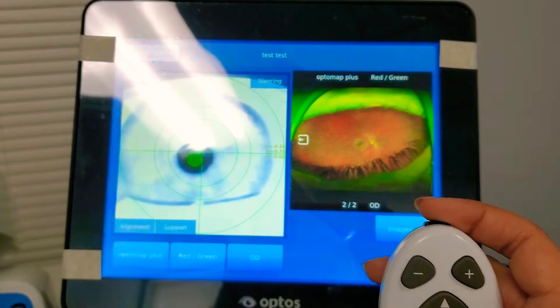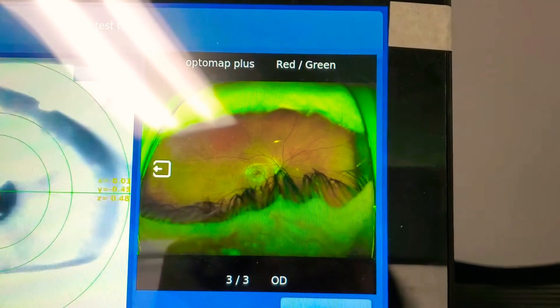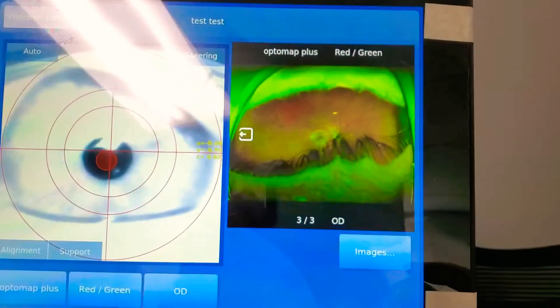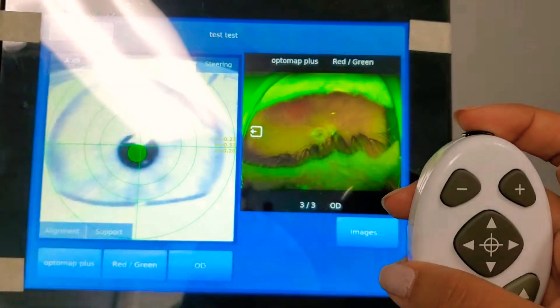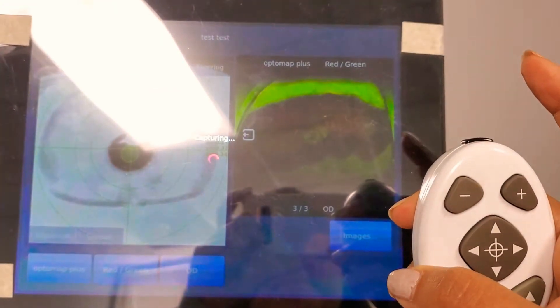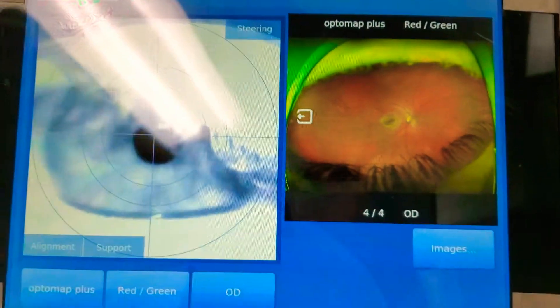All right. One, two, three. This is without dilation. So the patient keeps blinking. We're going to try one more time. Zoom out a little. Open wide. One, two, three. Looks like that's as good as we're getting for today.